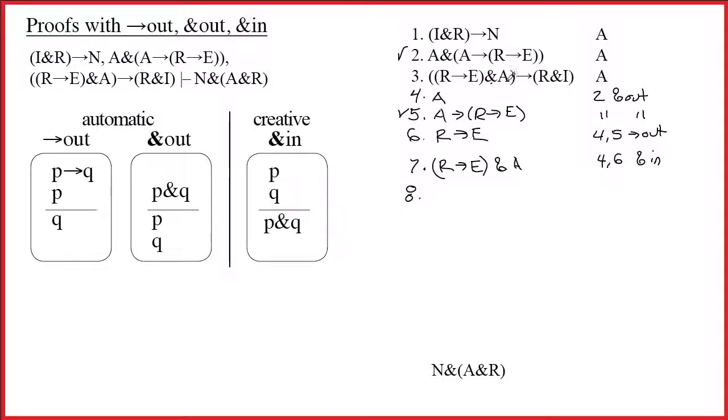And of course, if we have all this stuff, then we get to write R and I. Yeah, there's that stuff. I built it. So now I get to write R ampersand I, and the justification for that would be 3 and 7, 3, 7, arrow out. What line do I get to check off as a result of all this? Line 3, because I worked on its arrow.